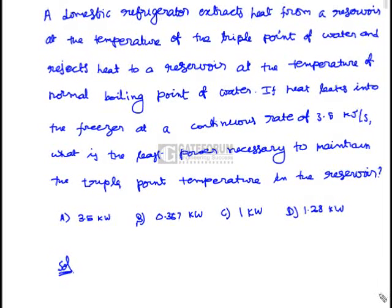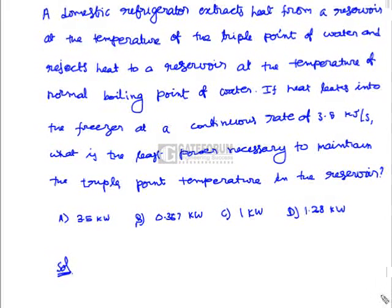A domestic refrigerator extracts heat from a reservoir at the temperature of the triple point of water and rejects heat to a reservoir at the normal boiling point of water. Heat leaks into the freezer at a rate of 3.5 kJ/s. Find the least power necessary to maintain the triple point temperature. Options are 3.5 kW, 0.367 kW, 1 kW, and 1.28 kW.